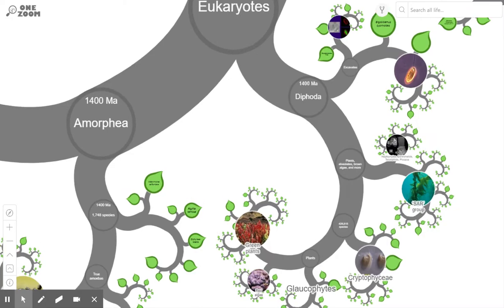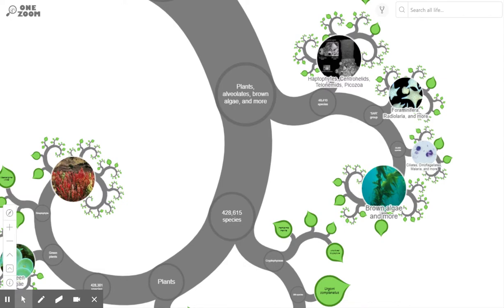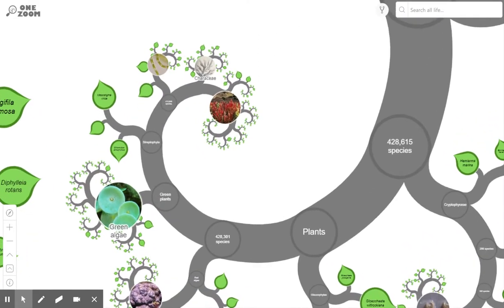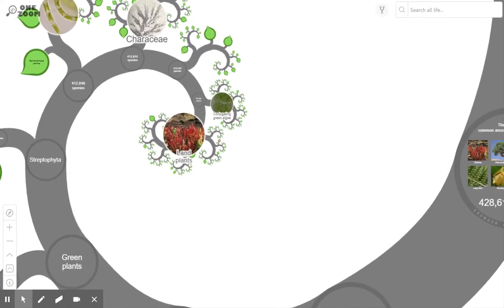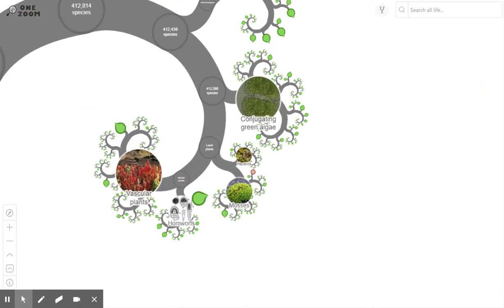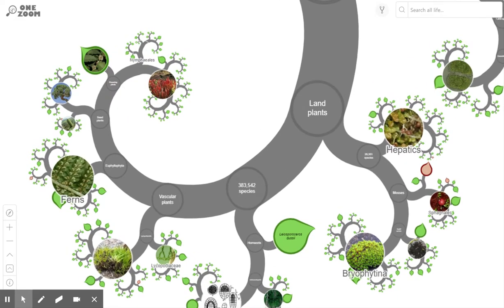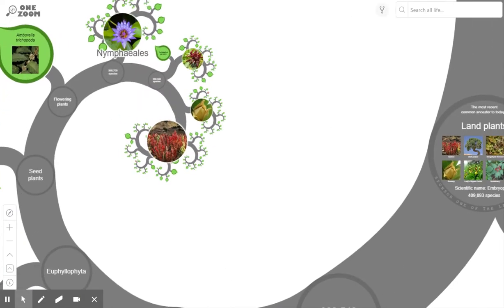Bear in mind that at this stage all life was ocean-based. The first primitive plants are appearing here — for example, brown algae. Moving along that branch we see green plants appearing, and further up we see land plants. This is another big milestone, because this is the point at which plants are making the transition from ocean-based to land-based. Zooming in, you start to see things like mosses, ferns, seed plants, and eventually flowering plants, which are of course the most evolved of the plants.